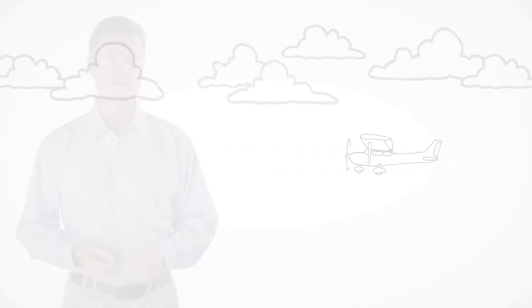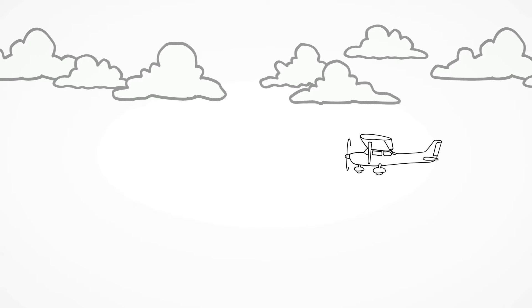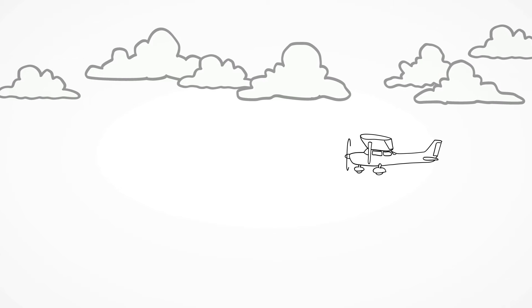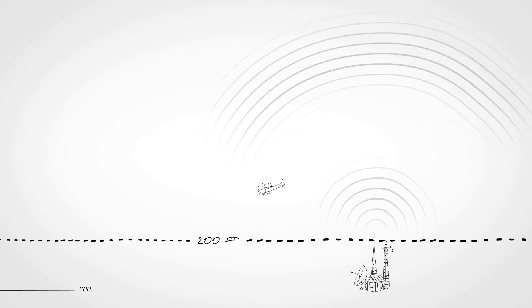Adding or upgrading with a WAAS position source can provide your aircraft with some new capabilities as well, like the ability to fly GPS-guided LPV glide path instrument approaches down to as low as 200 feet.